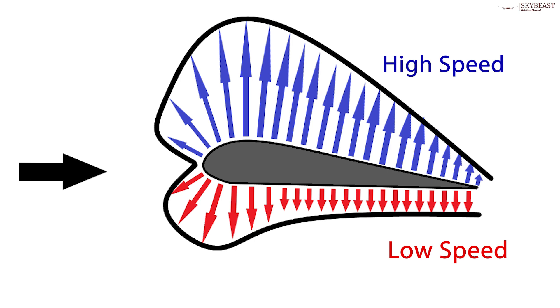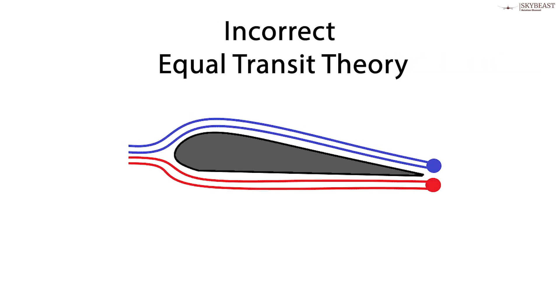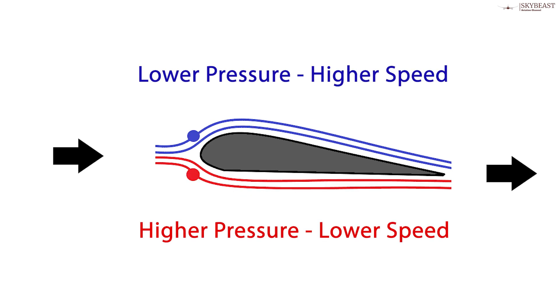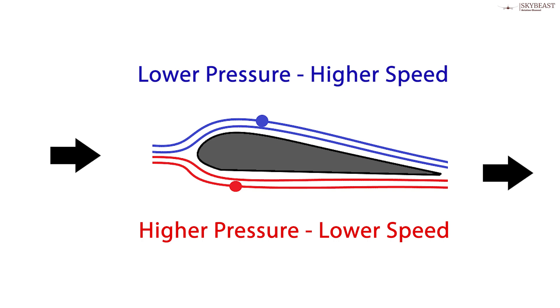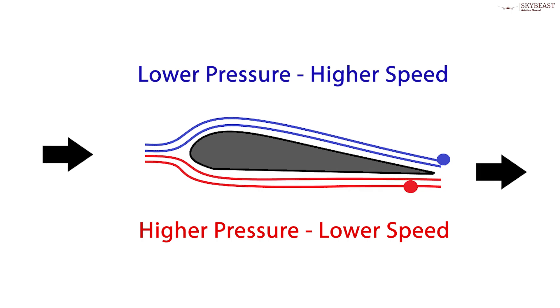The difference in speed, observed in actual wind tunnel experiments, is much bigger than you'd predict from the simple equal transit theory. So if our two air molecules separate at the front, the one going over the top arrives at the tail end of the wing much faster than the one going under the bottom. No matter when they arrive, both of those molecules will be speeding downward, and this helps to produce lift in a second important way.